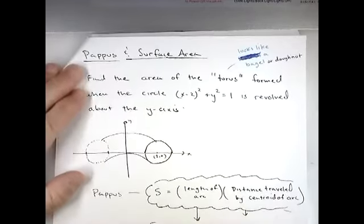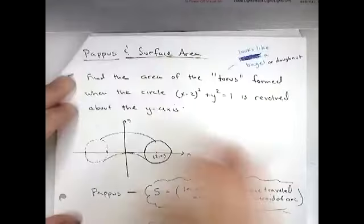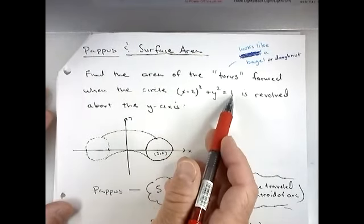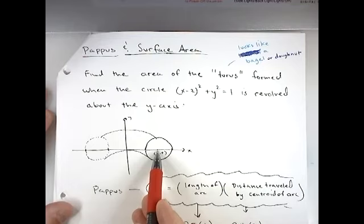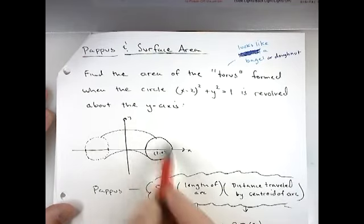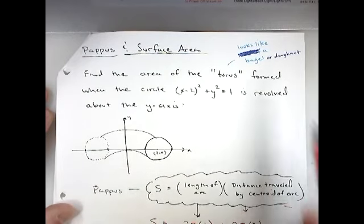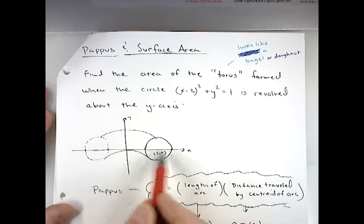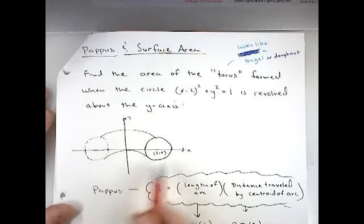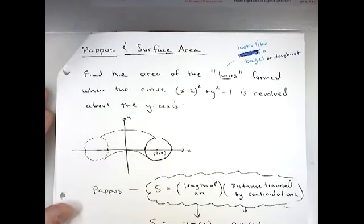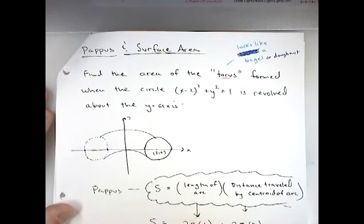One other problem you could, Pappus could help you with, surface area. Let's say we took the circle (x-2)² + y² = 1. That would be a circle centered at (2,0) on the x-axis with a radius of 1. And revolve that around the y-axis to get a shape that's going to resemble either a bagel or a donut. I can't draw the whole thing. This is like a slice of it, but hopefully you can picture like a bagel coming around the y-axis here. And that's also referred to as a torus when you revolve a circle. We call that a torus. We want the surface area of that torus.